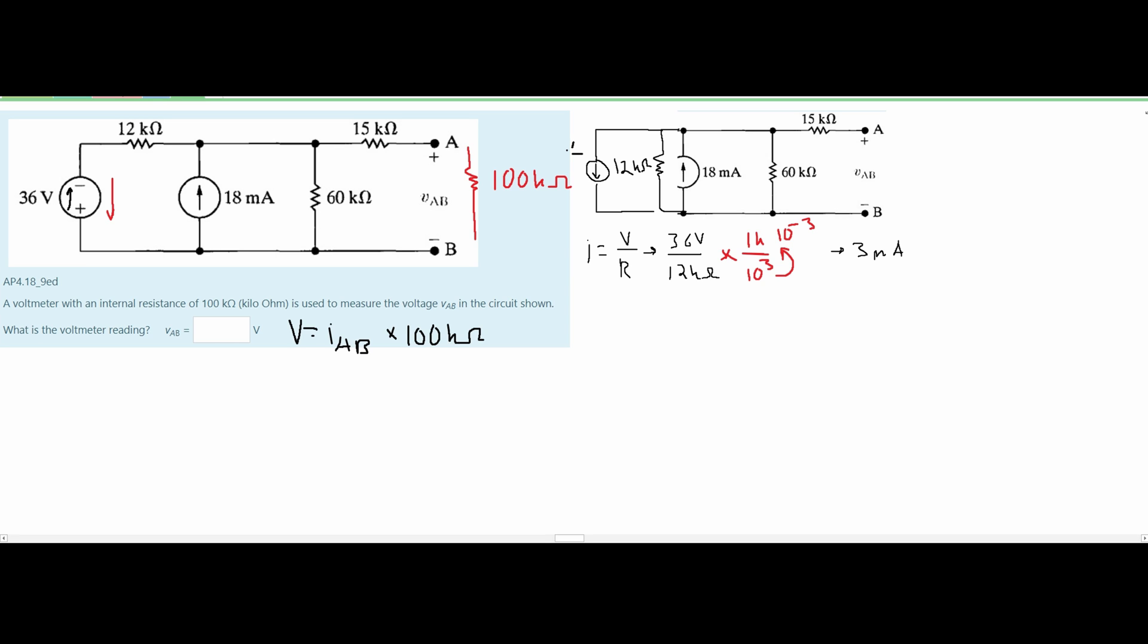So we know that the current going through here is 3 milliamps. Looking at the nodes we can look at the node here and we know the current is going into it and this current, this 3 milliamp is going out of it. It's going out of the node.